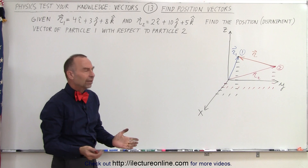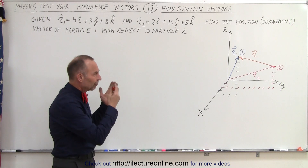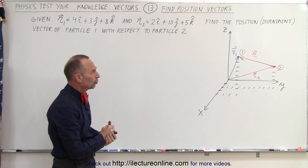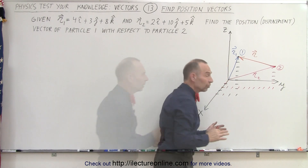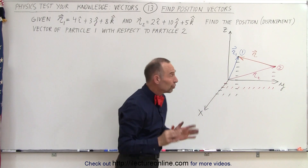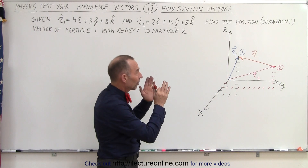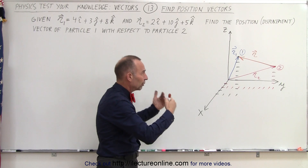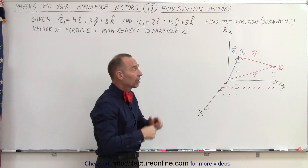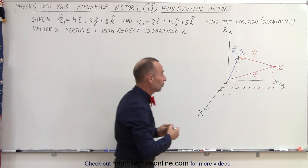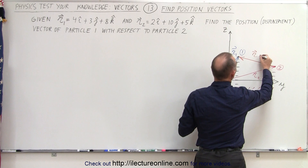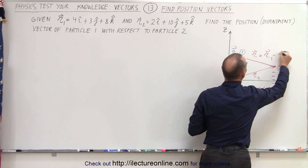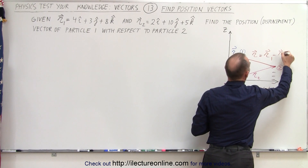So how do we represent that vectorially in terms of R1 and R2? We're trying to find a mathematical equation for what R is equal to, and it turns out that this is equal to vector R1 minus vector R2.